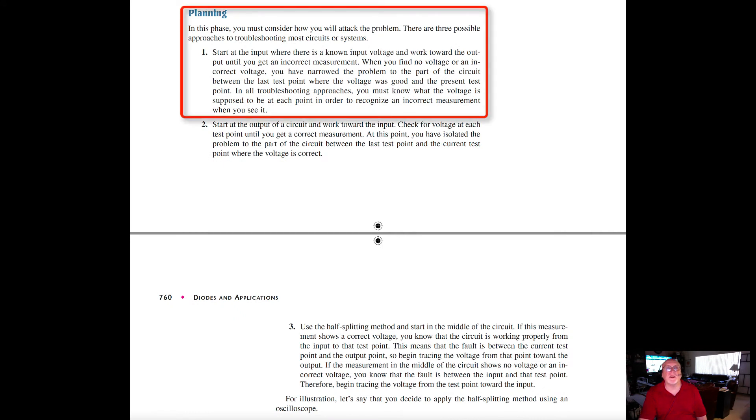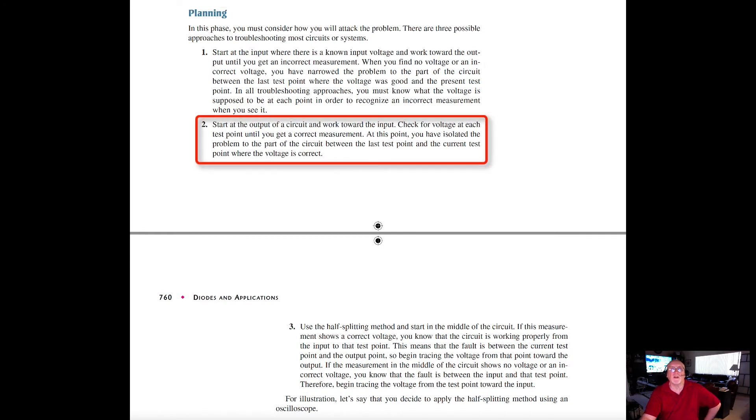In the planning phase, start at the input where there's a known input voltage and work toward the output until you get an incorrect measurement. When you find no voltage or an incorrect voltage, you will have narrowed the problem to the part of the circuit between the last test point where the voltage was good and the present test point. In all troubleshooting approaches, you must know what the voltage is supposed to be at each point in order to recognize an incorrect measurement when you see it. Start at the output of the circuit and work toward the input. Check for voltage at each test point until you get a correct measurement. At this point, you've isolated the problem to the part of the circuit between the last test point and the current test point where the voltage is correct.